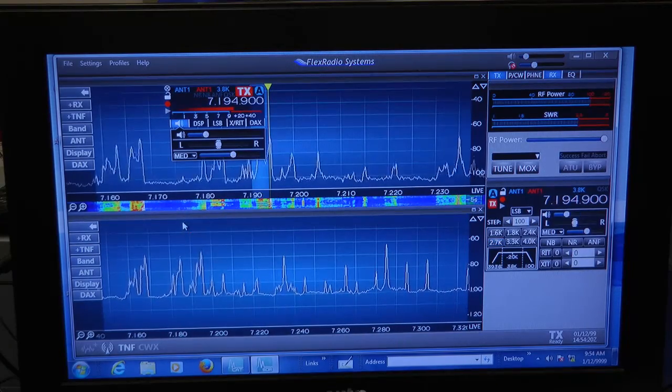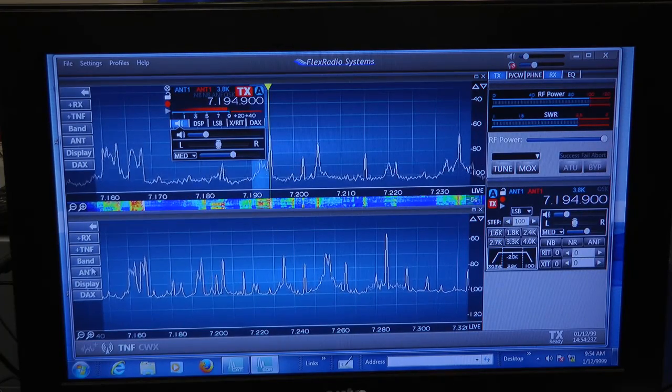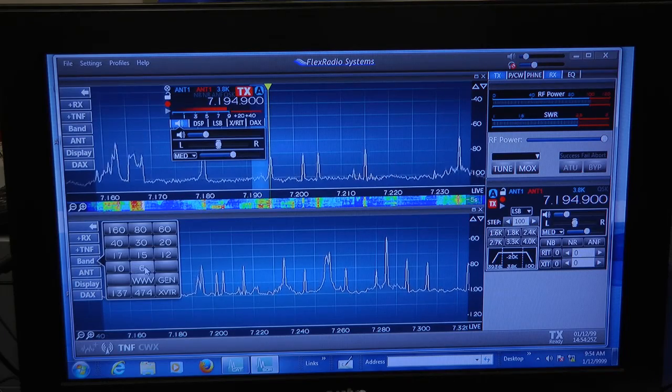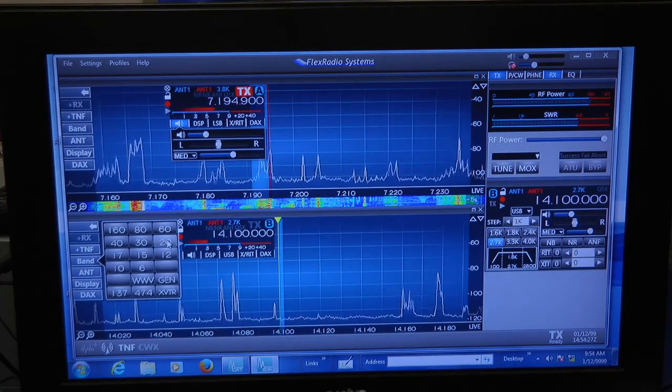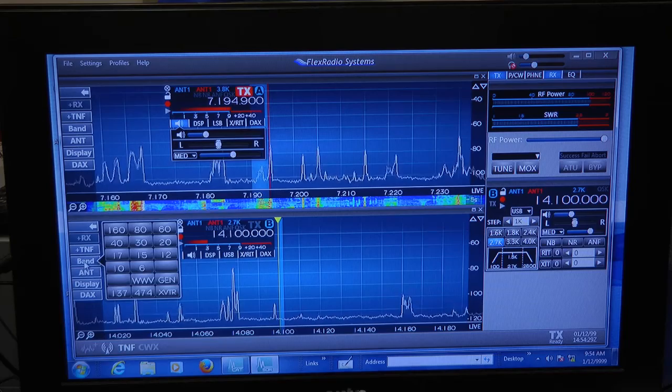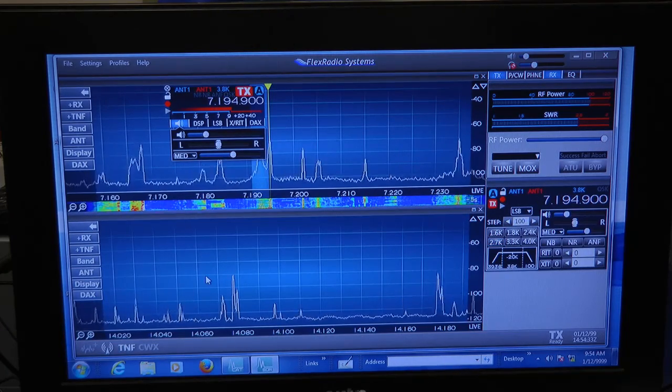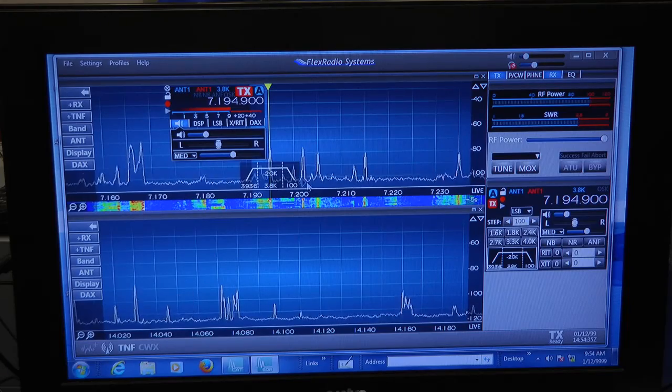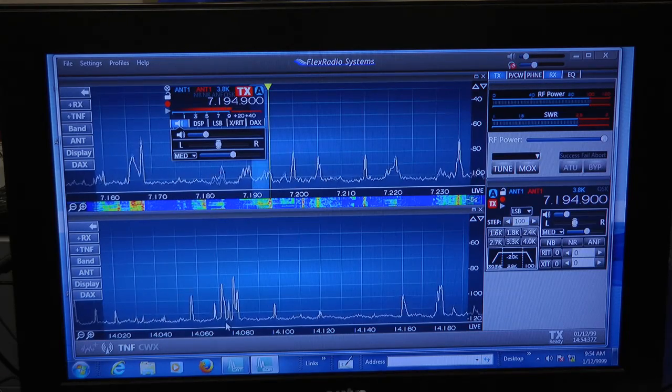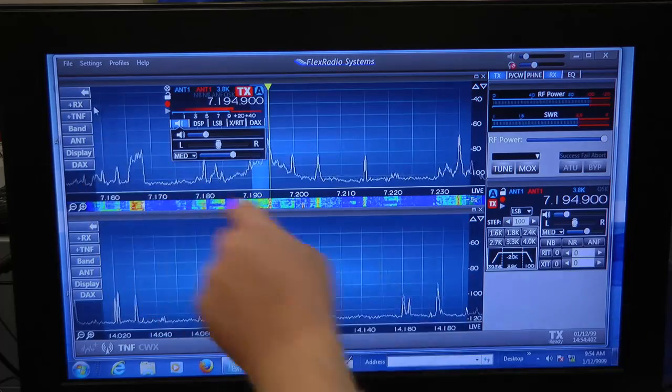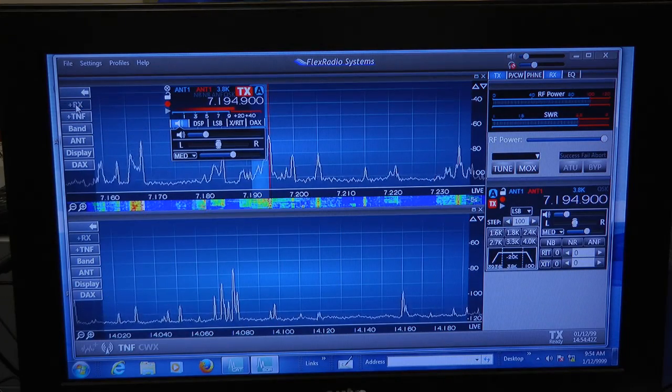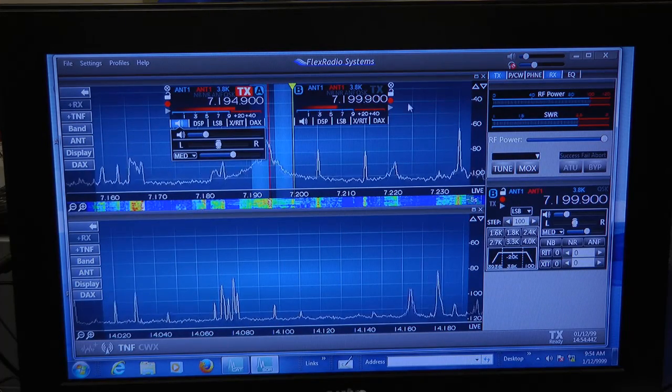And I can monitor any other band that I wish. Well, here's 40 meters again down here, but I can also monitor, at the very same time, 20 meters. And I can shrink that back and turn this off. I don't need to hear it right now, but I can look at two different bands at once. Over here in this panel, this turns on and off the receiver or adds another one.